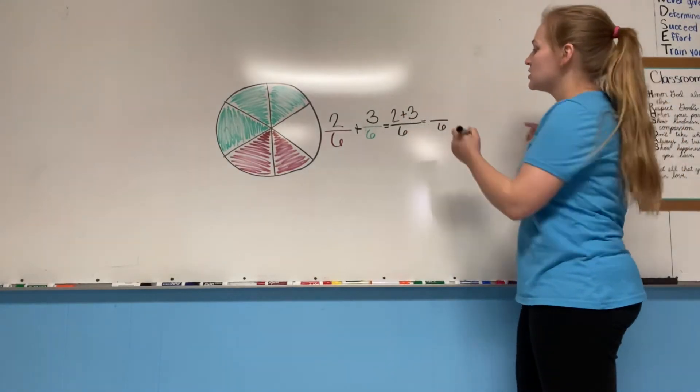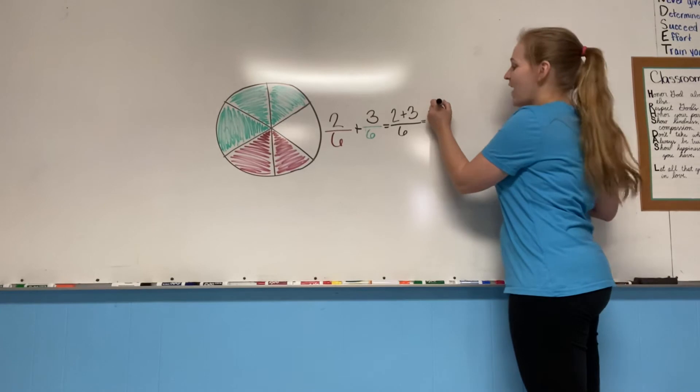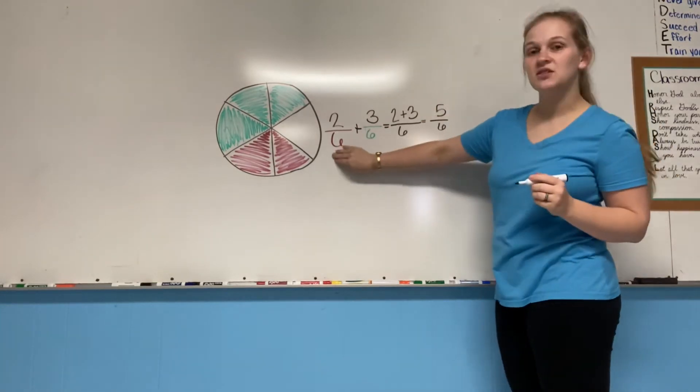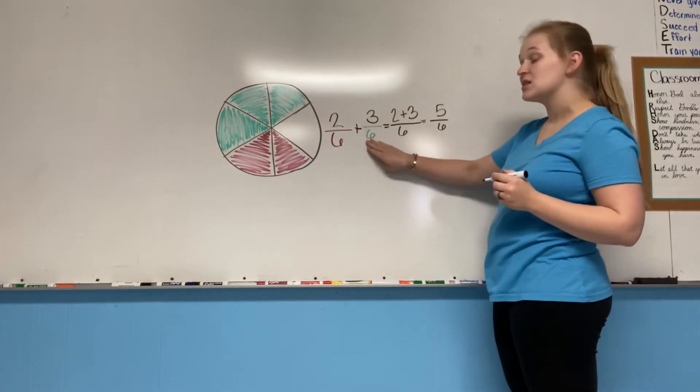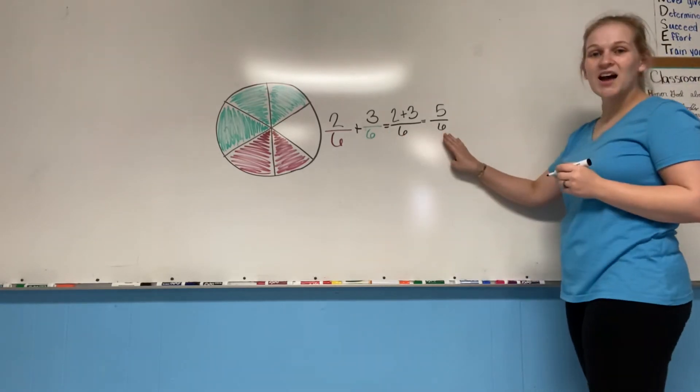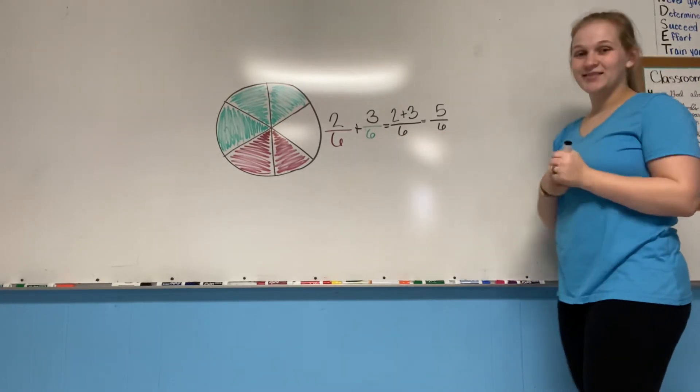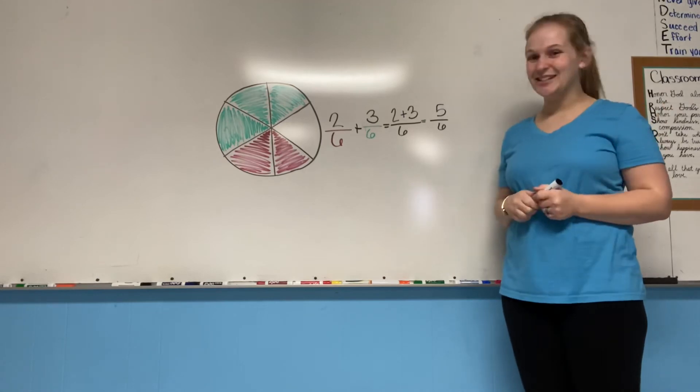So what is two plus three? Five. Right. So two sixths plus three sixths equals five sixths. There you go. It's as easy as that.